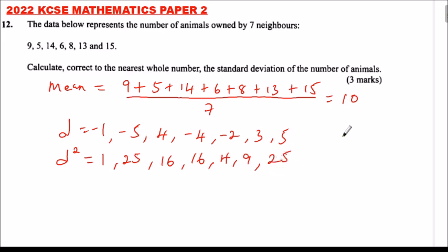We say variance is equal to summation of deviation squared divided by the number n. Standard deviation is equal to the square root of variance.